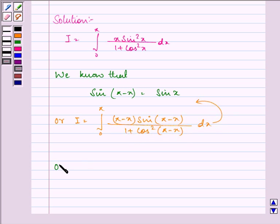Or I equals integral 0 to π of (π-x) sin x over 1 plus cos²x dx, since sin(π-x) is sin x and cos(π-x) is also cos x when squared.